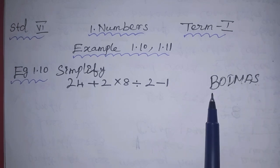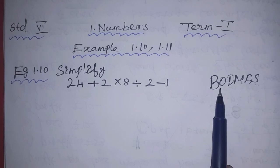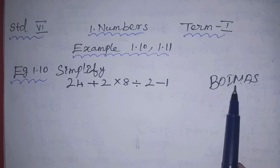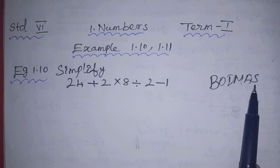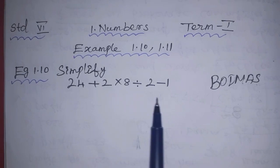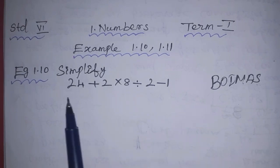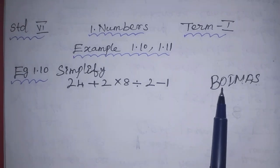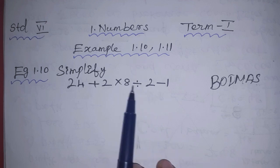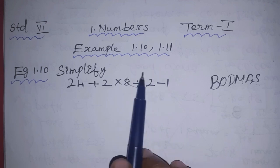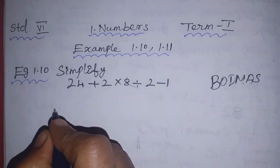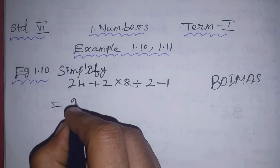First, we solve the bracket, then Of, Division, Multiplication, Addition, Subtraction — in this order. If you look, there are no brackets, no Of, but there is Division. So we divide first, then proceed in order.